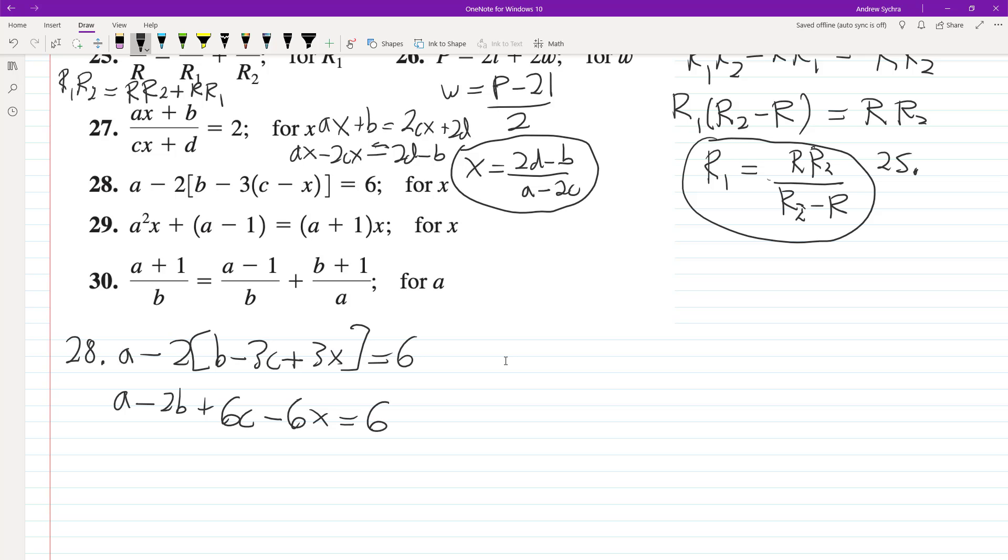So move everything to the other side. This becomes minus 6, this becomes 6X. All right. And then just divide through by 6. So X is going to be equal to A minus 2B plus 6C minus 6 divided by 6.